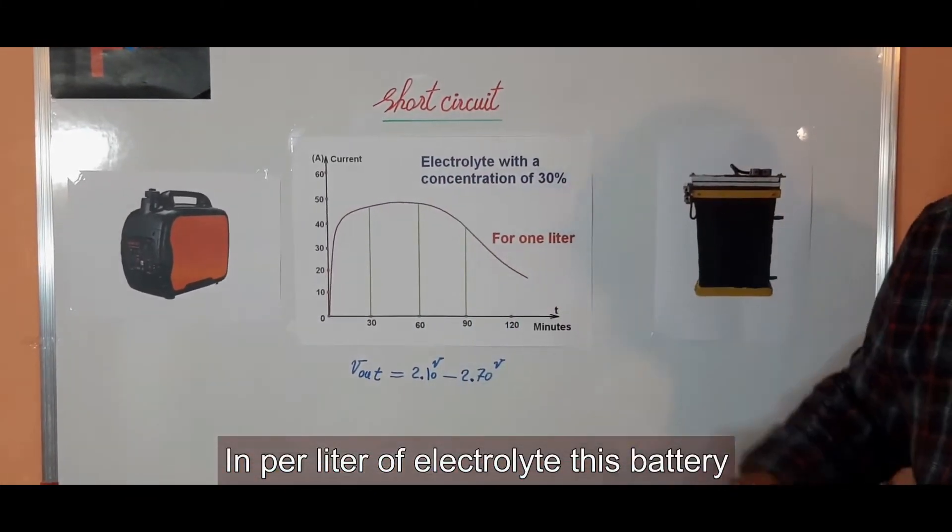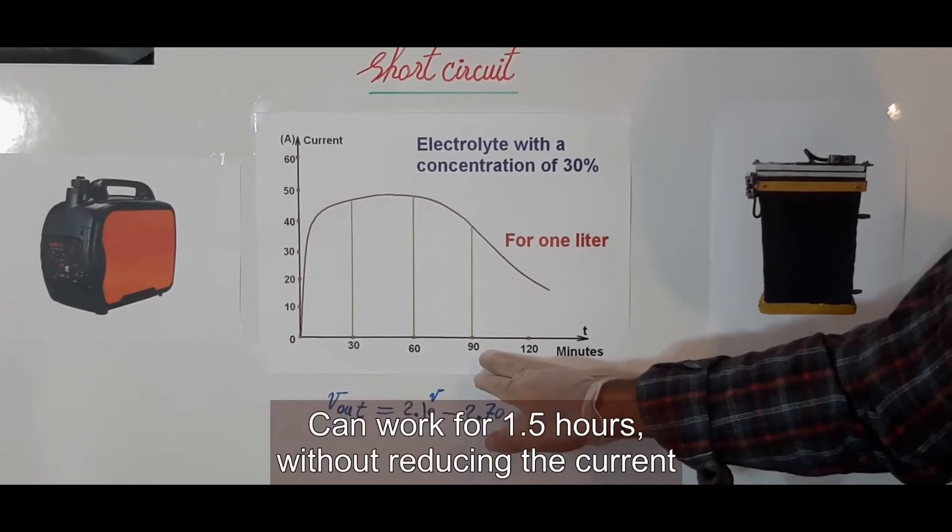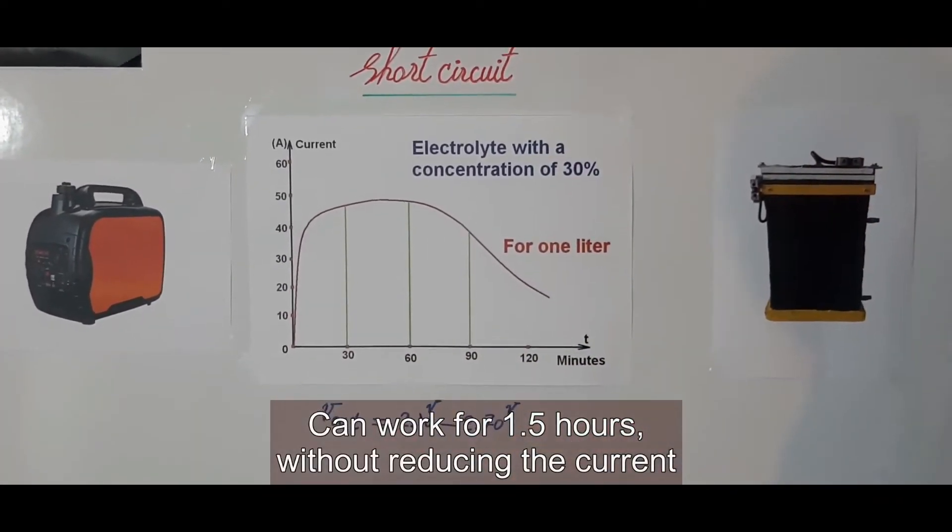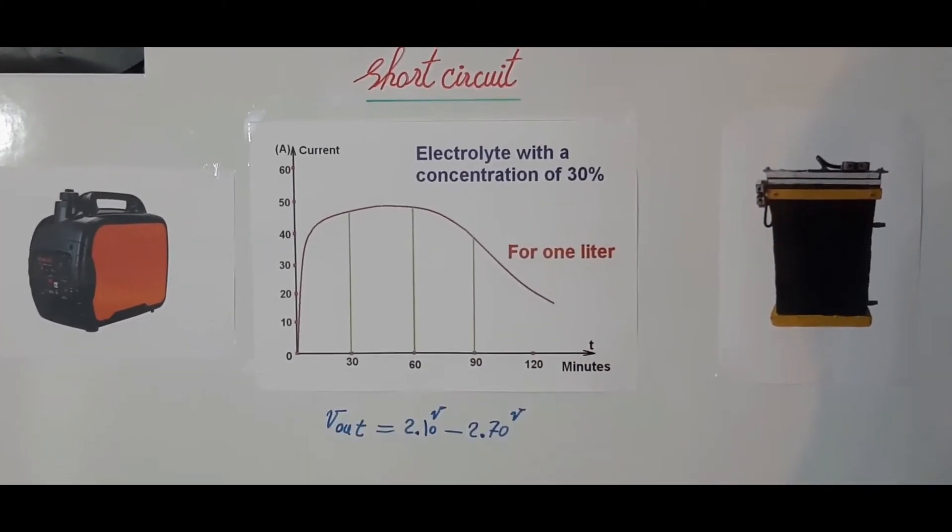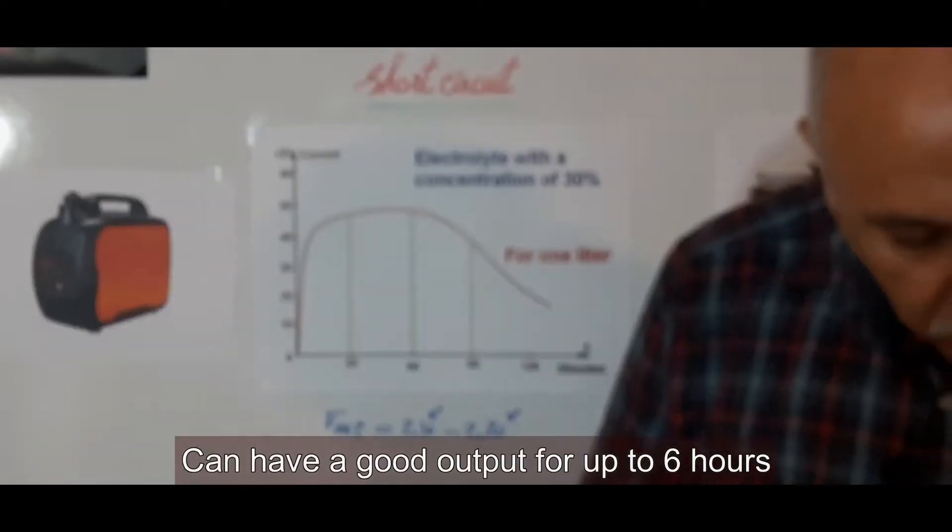Per liter of electrolyte, this battery can work for 1.5 hours without reducing the current. So, the battery with 4 liters of electrolyte can have a good output for up to 6 hours.